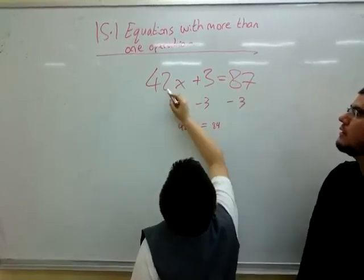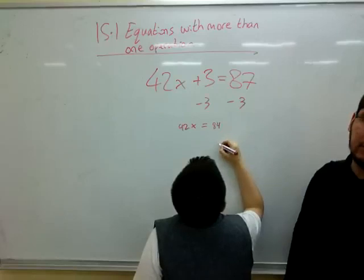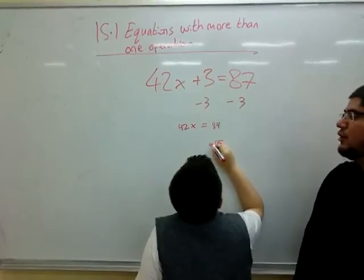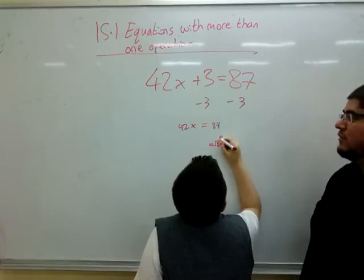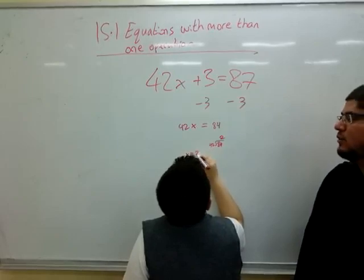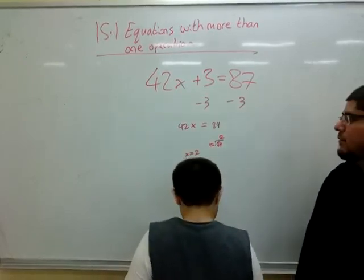And then you divide by 42. Good, so we're going to divide by 42 on both sides now to get x by itself, and you can see that 42 is just half of 84, so x would equal 2. Great.